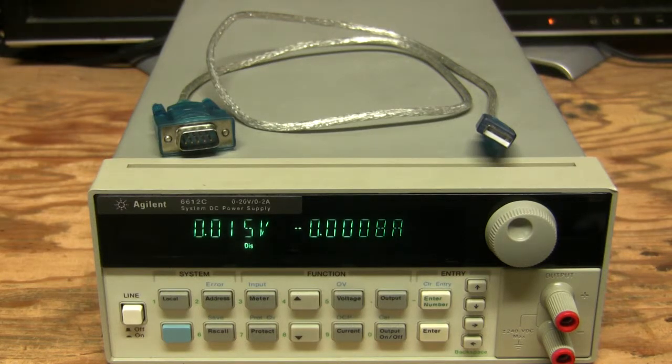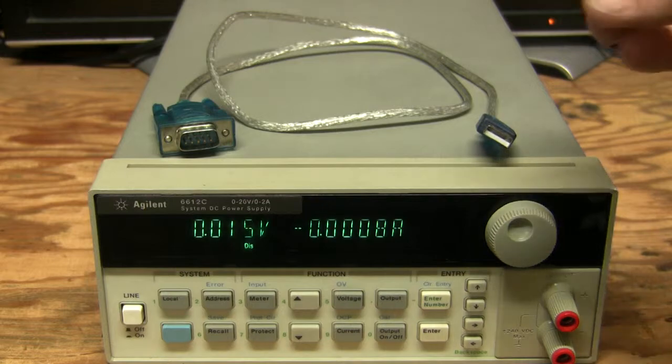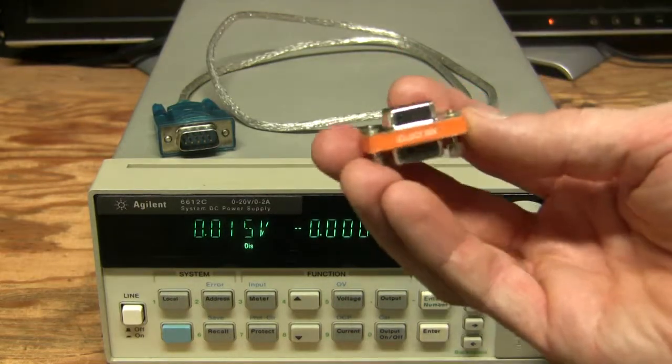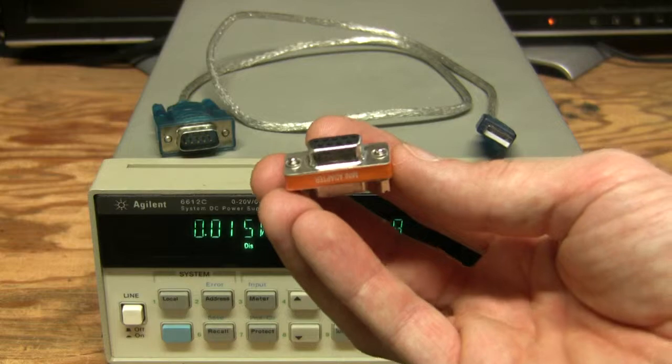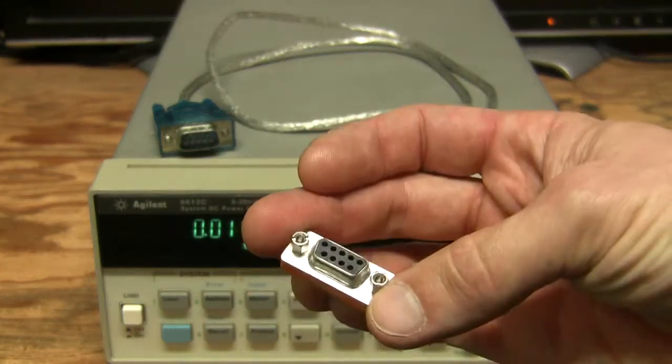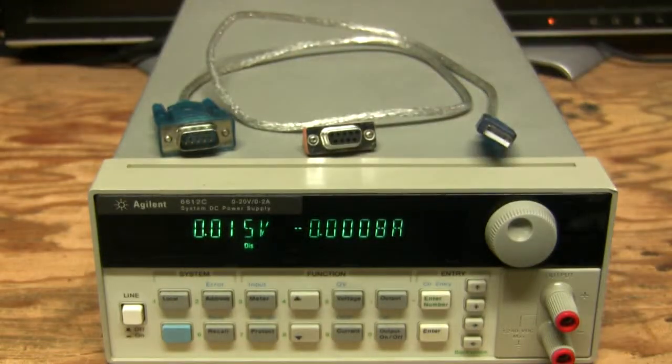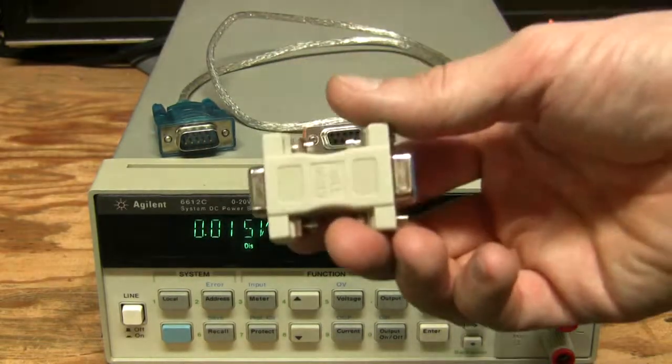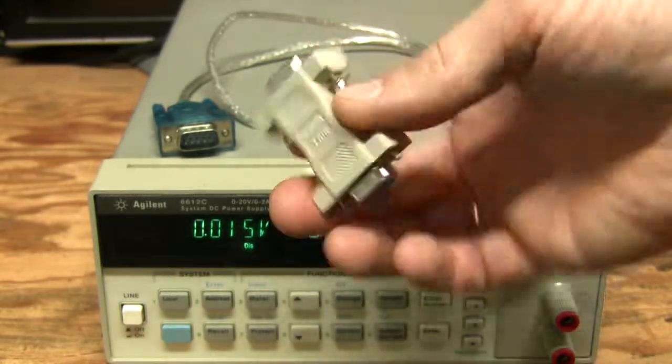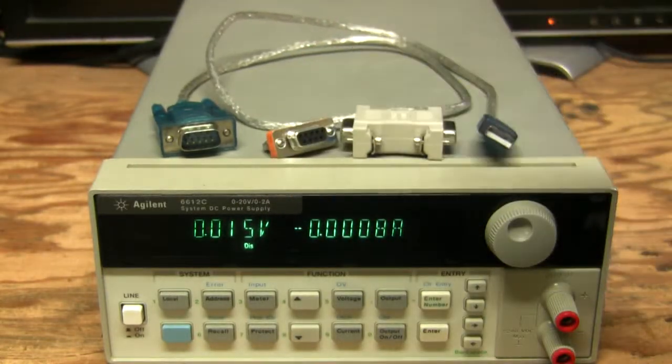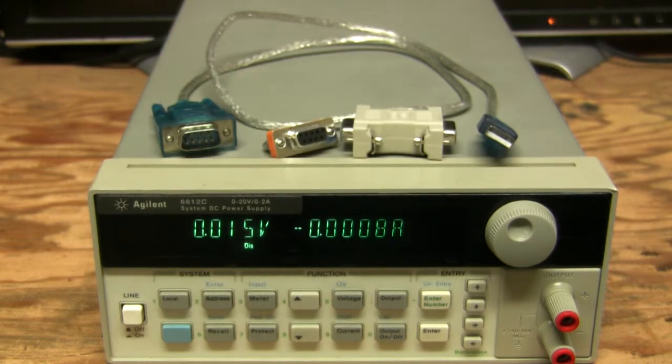Or maybe COM3. I use Ubuntu Linux - in that system it will show up as /dev/USB with the next number. What else we need? We need one of these null modem adapters which is male to male, or it can look like this. I have a couple of them. So male to male again. So let's hook it up and play with it.